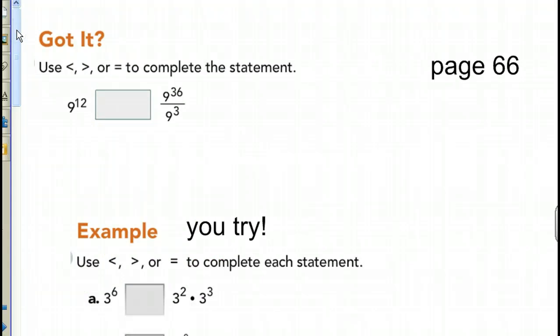Alright. So, now let's try the next got it. We're now on 66. So, it says use less than, greater than, or equal to to complete the statement. 9 to the 12th. So, we're basically going to be filling in this box right here. So, 9 to the 12th and this is actually equal to 9 to the 36th minus 3. So, that's actually 9 to the 33rd. Well, now we can just compare our exponents basically. Which exponent is bigger? This one over here is. So, we know that 9 to the 12th is less than 9 to the 33rd.